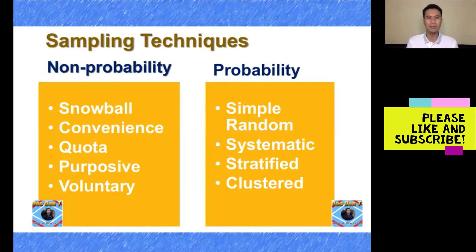Under non-probability, we have snowball, convenience, quota, purposive, and voluntary. Under probability, we have simple random, systematic, stratified, and clustered.